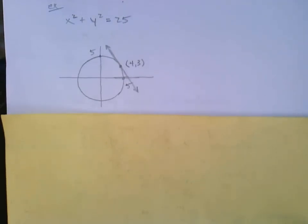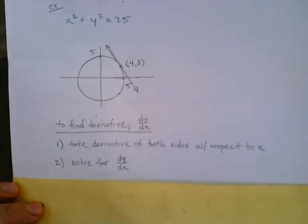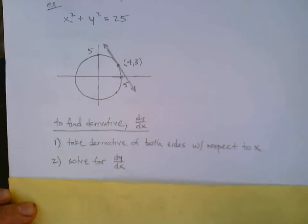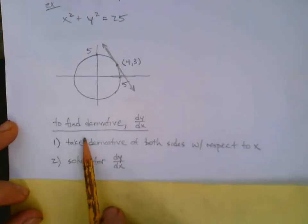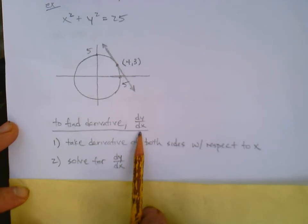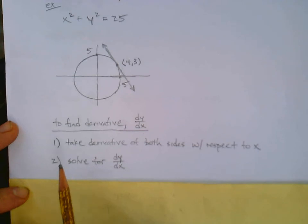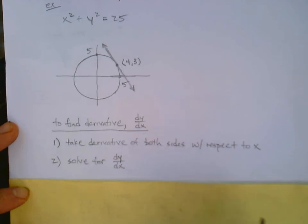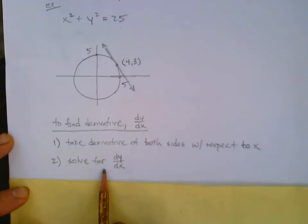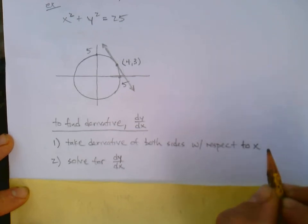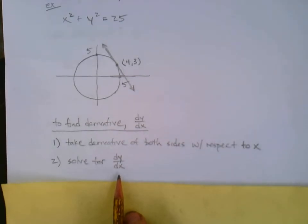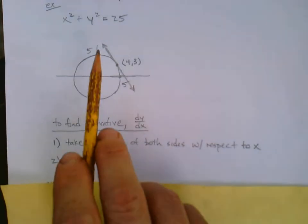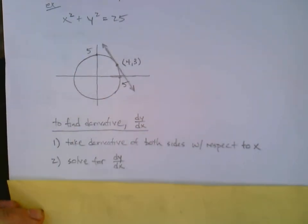We should still be able to take derivatives of these sorts of things. Here are the steps for implicit differentiation. To find dy/dx: Step 1 — take the derivative of both sides of the equation with respect to x. Step 2 — solve for dy/dx. We'll do an example right now.